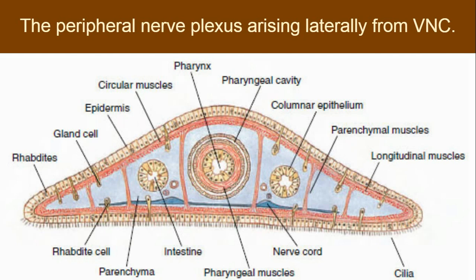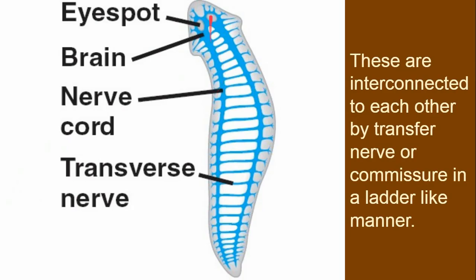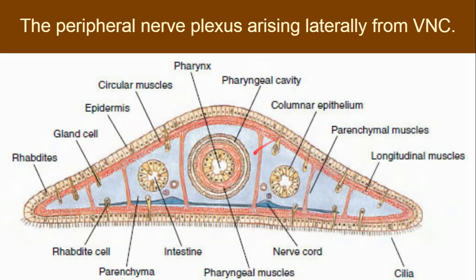The peripheral nerve plugs arise laterally from the ventral nervous system. These nerve plugs are present on the ventral side. If we take a cross-section of the planaria, we can see the dorsal side on top and the ventral side at the bottom. In the middle there are nerve cord lines visible — one nerve cord on each side — and these lines are on the ventral side. This system is called the ventral nervous system.